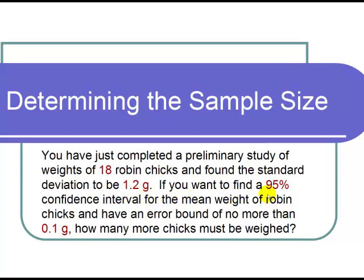If you want to find a 95% confidence interval for the mean weight of Robin Chicks and have an error bound of no more than 0.1 grams, how many more chicks must be weighed?